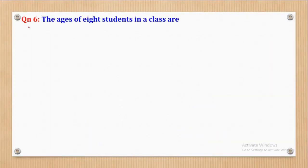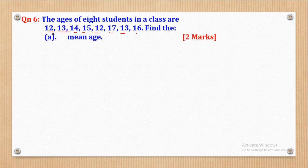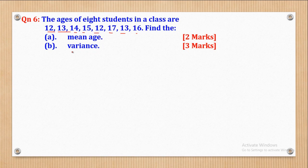We now go to question 6. Question 6 says the ages of 8 students in a class are 12, 13, 14, 15, 12, 17, 18, and 16. Find: part A — mean age (2 marks), and part B — variance (3 marks). We are going to go through this solution step by step so that we can see how those 5 marks can be obtained.